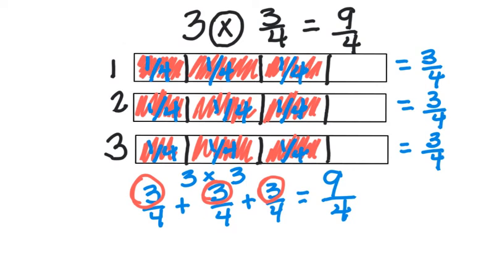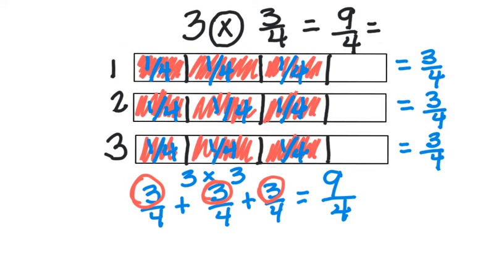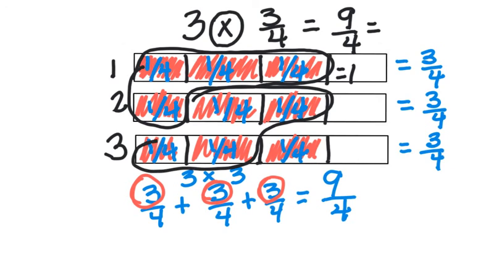Nine fourths is an improper fraction, and improper fractions can be converted to mixed numbers. To show this in our model, I'm going to circle all the four fourths. That's four fourths — there's one. Here's another four fourths — that's two. And then we have one fourth left over. So nine fourths is a fraction greater than one, giving us two and one fourth. Three times three fourths is nine fourths, or two and one fourth.